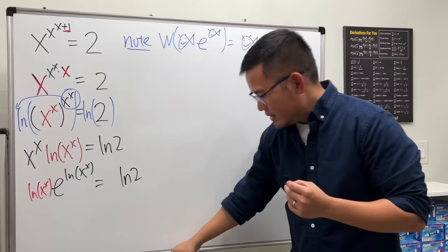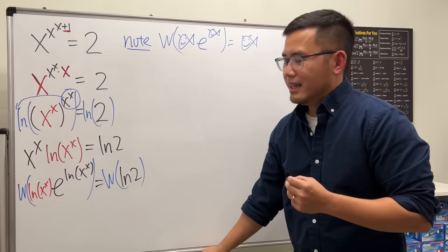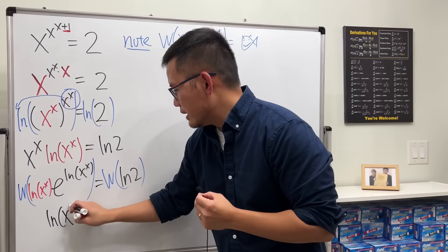Three markers. Go ahead, take the Lambert W function. Take the Lambert W function. On the left-hand side, we get what? Just that back. Just ln of x to the x. And that is equal to the Lambert W function of ln 2. Just like that.